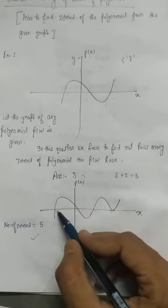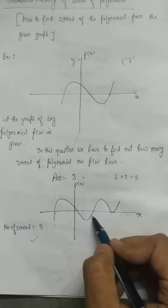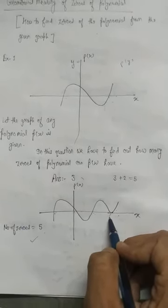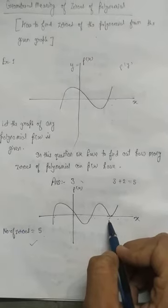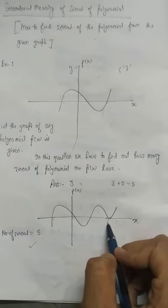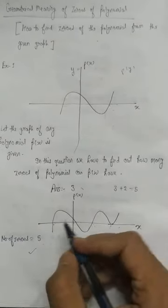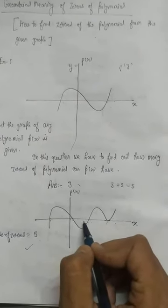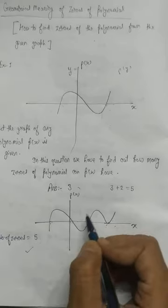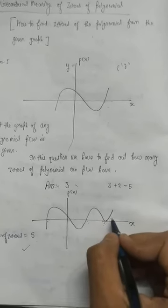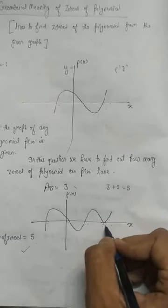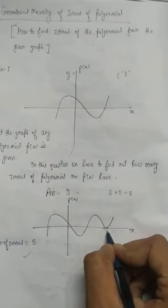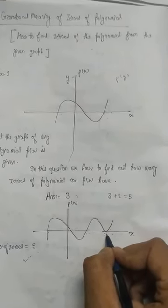Let us count: one, two, three, four. At first it seems the answer will be four, but the answer will not be four. The reason is that at three points the graph completely intersects the x-axis, but at this fourth point the graph only touches the x-axis.